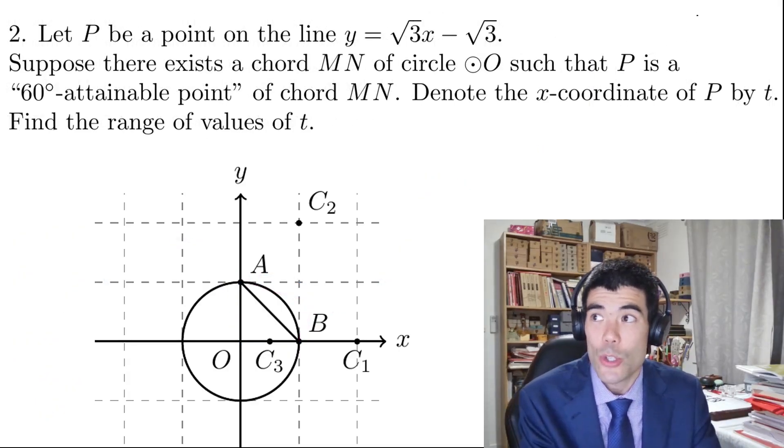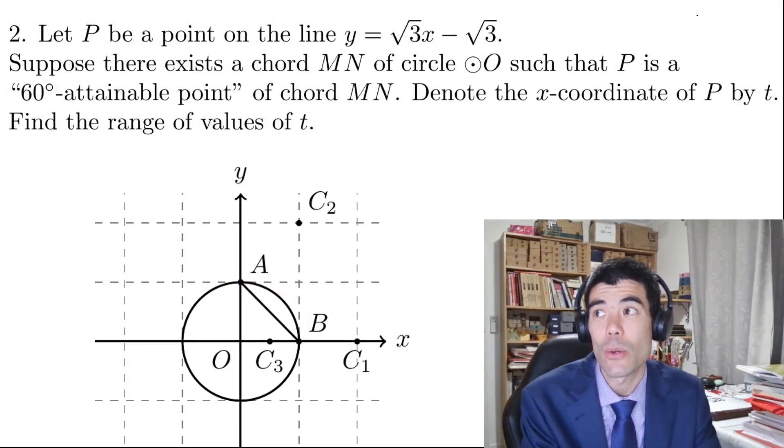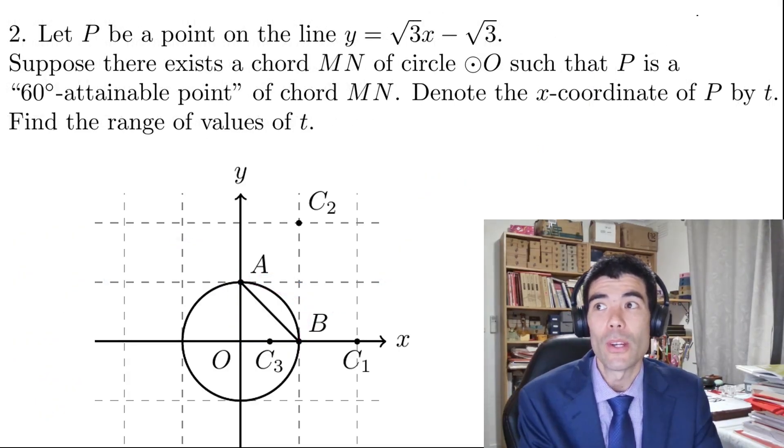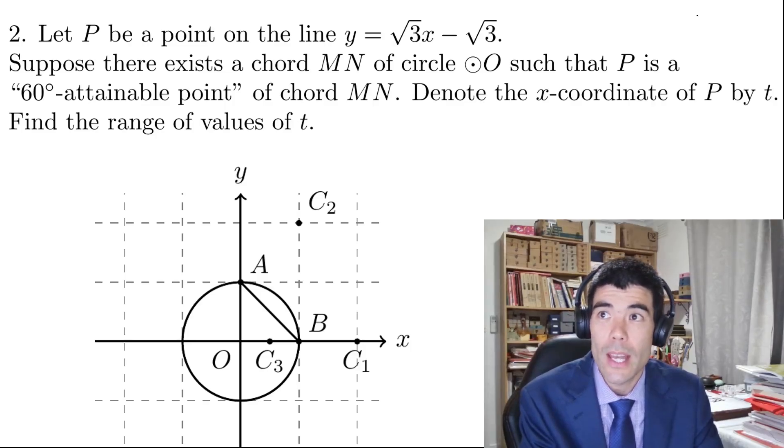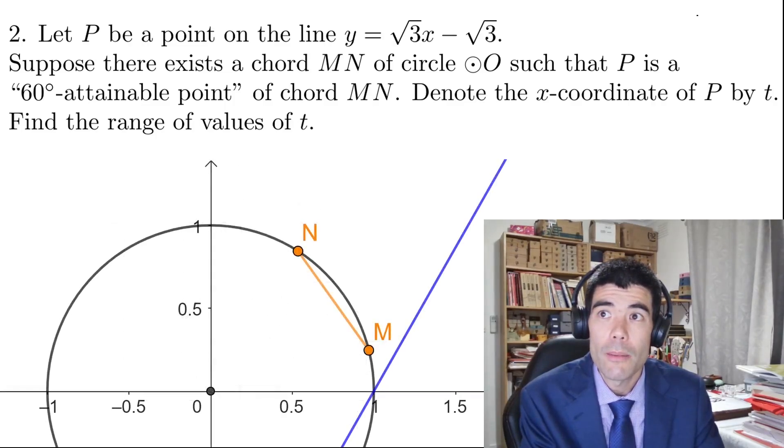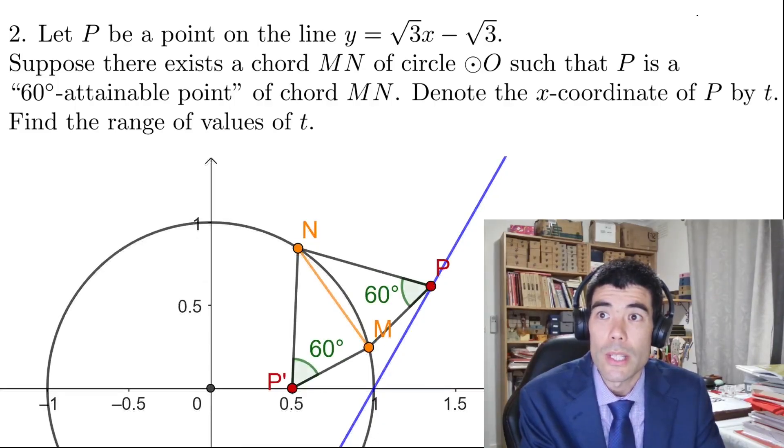Okay, here's part 2 and this is a really challenging part of the question. Let P be a point on line y equals square root 3x minus square root 3. Suppose there exists a chord MN such that P is a 60 degree attainable point. Denote the x coordinate of P by T and find the range of values of T.